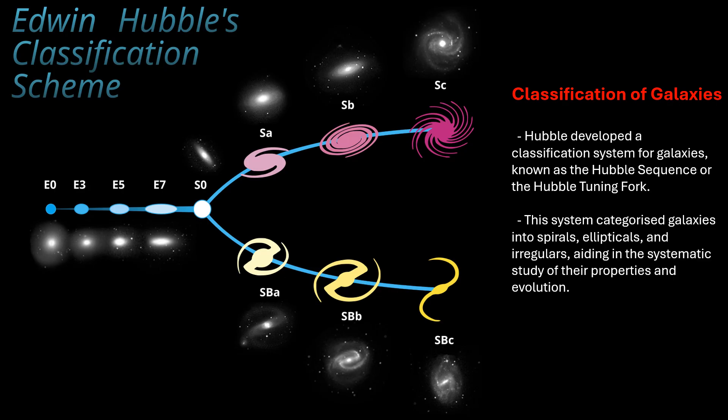Hubble also developed a classification system for galaxies, known as the Hubble sequence, or the Hubble Tuning Fork. This system categorized galaxies into spirals, ellipticals, and irregulars, aiding in the systematic study of their properties and their evolution.